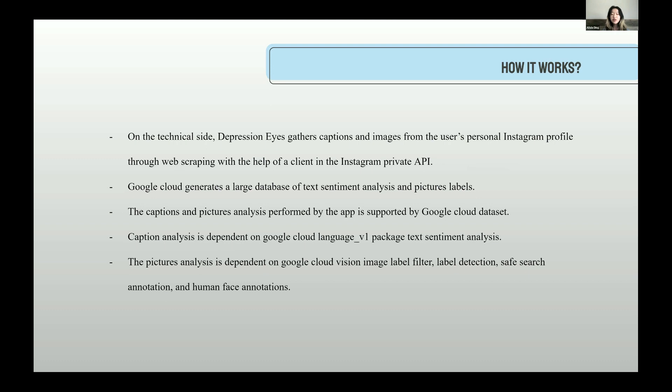The picture analysis is dependent on Google Cloud Vision image label detection, safe search annotation, and human face annotations. The app finds and reports whether half of the user's pictures are depressive depending on the percentage of depressive images, and splits the caption analysis results into slightly depressive, depressive, and positive captions.